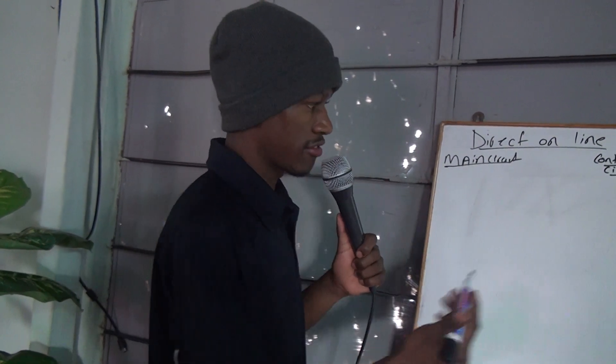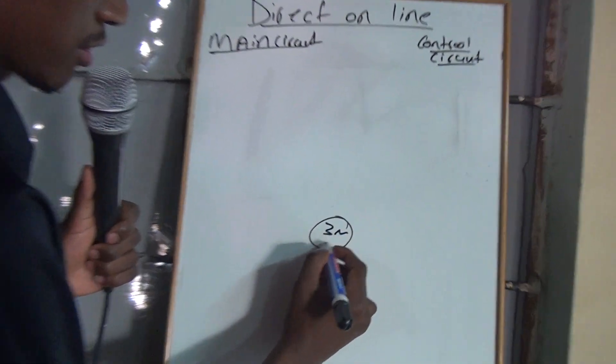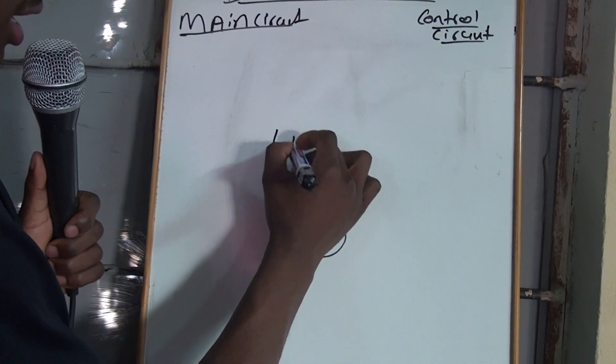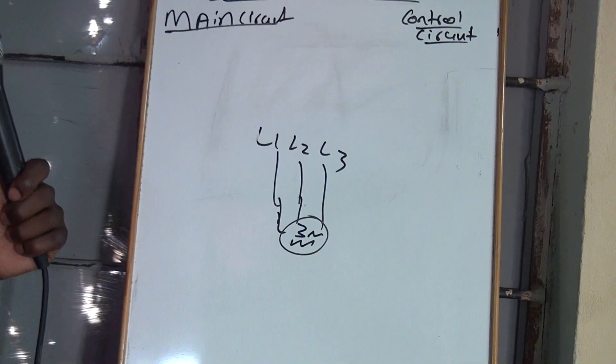Direct online brings about the safety devices, the contactors and stuff. For example, if this is your motor, three phase motor, and then you have your supply line one, line two, line three. You see, this motor is not isolated from the supply.